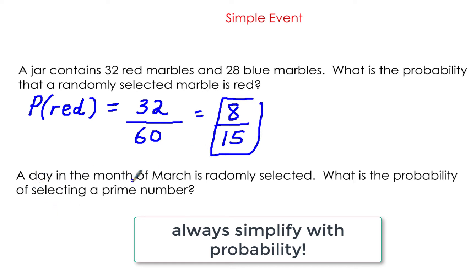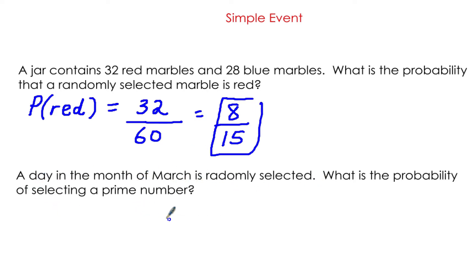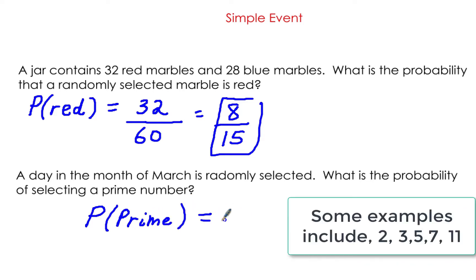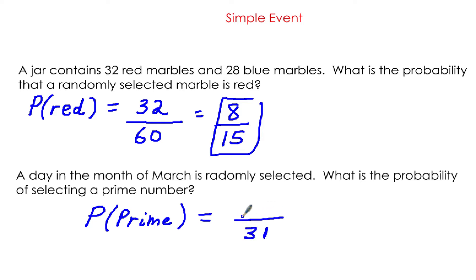A day in the month of March is randomly selected. What is the probability of selecting a prime number? Prime numbers are divisible by themselves and one only. There are 31 days in March. How many prime numbers are between 1 and 31? There are 11. So the probability of a prime number being drawn is 11/31.